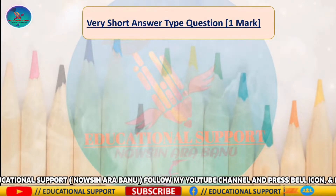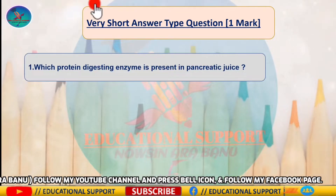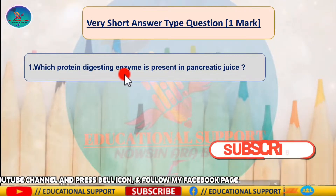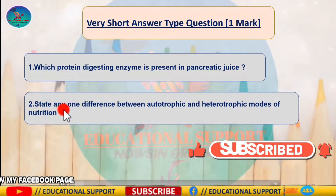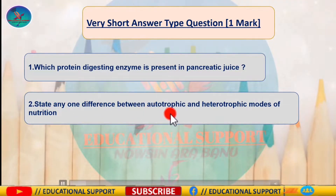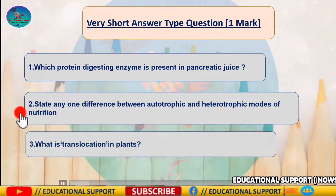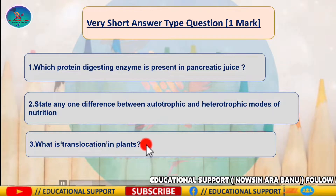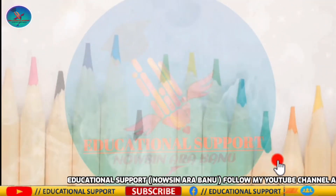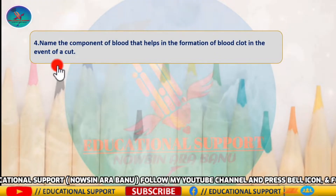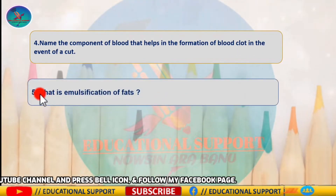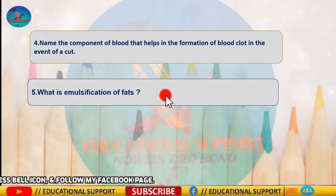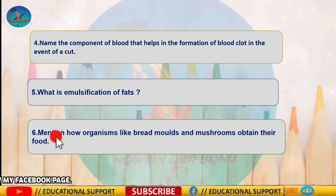Very short answer type — one mark questions. Question one: which protein digestive enzyme is present in pancreatic juice? Question two: state any one difference between autotrophic and heterotrophic modes of nutrition. Question three: what is translocation in plants? Question four: name the component of blood that helps in the formation of a blood clot in the event of an injury.